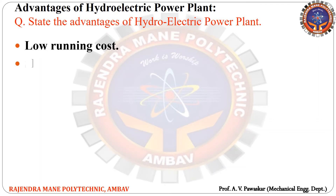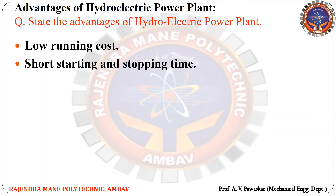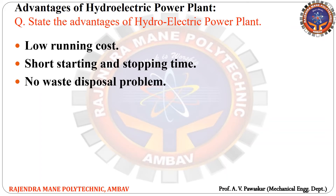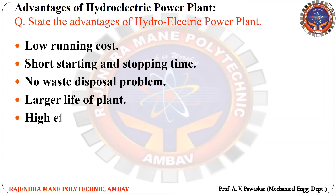The second advantage is short starting and stopping time — it takes only a few minutes to run and synchronize the plant, and stopping also takes very short time. Third advantage: no waste disposal problem — these plants have no ash disposal, nuclear waste disposal, etc. Fourth advantage: larger life of the plant — the plant has a comparatively long life. Fifth advantage: high efficiency — this plant has high efficiency over a wide range of loads compared to other power plants.